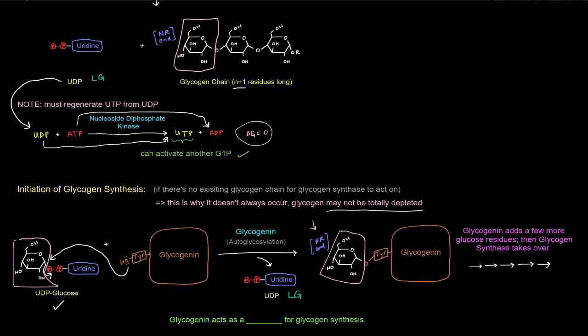And so now we have this non-reducing end available to add more glucose residues to. And of course this UDP goes back and gets regenerated, right? It goes to regenerate UTP, but now we have glycogenin with just that one residue on it. So glycogenin can actually autoglycosylate itself some more, and it will continue to do so. So glycogenin adds a few more glucose residues. And then at a certain point, once it's about eight residues long, then glycogen synthase takes over. So in essence, glycogenin acts as a primer for glycogen synthesis. It kind of gets things going and then glycogen synthase takes over.